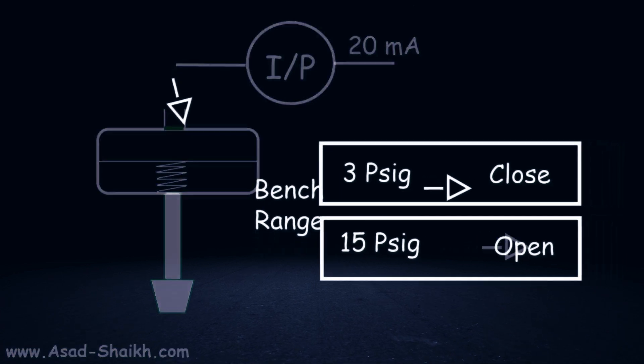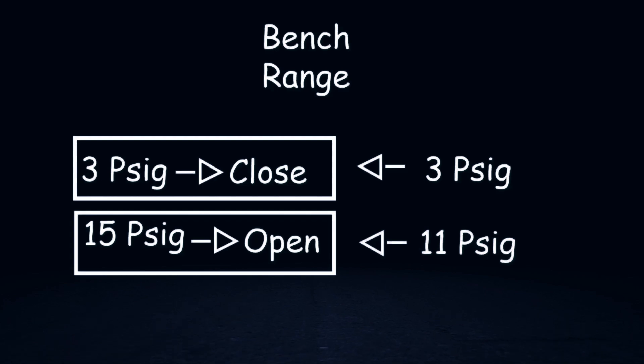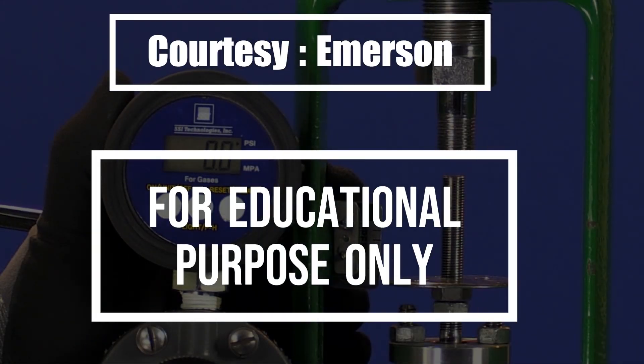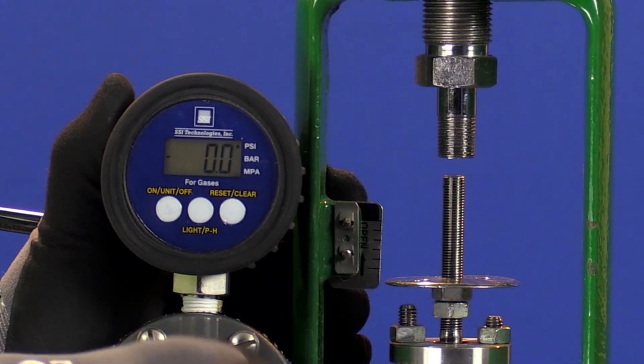This is what is called the bench range. In order to understand it even more properly with a practical demonstration, let us take an Emerson example where they calibrate an actuator for 3 to 11 psig range.